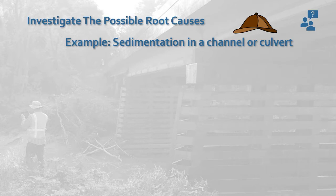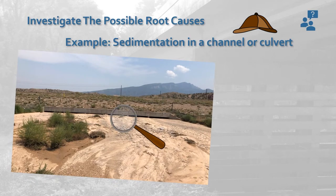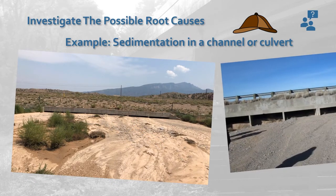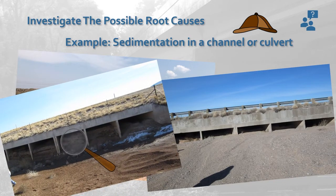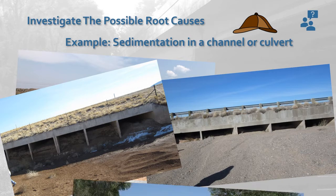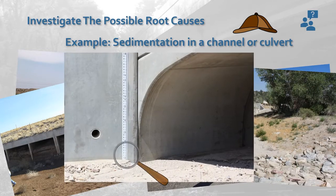Another example could be sedimentation reducing ditch or culvert capacity. This could be a local problem of sediment being deposited at a specific location due to an abrupt change in slope or width — an on-site cause. Or it could be an excessive amount of sediment flowing into the ditch from upstream and outside of the right-of-way due to poor land use practices in construction, development, or agriculture.